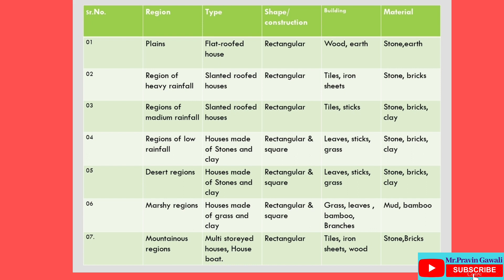Fifth region: Desert region. Type: houses made of stones and clay. Construction: rectangular and square. Building material for roof: leaves, sticks and grass. Material for walls: stone, bricks and clay.